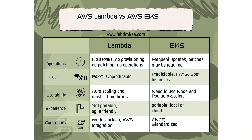The next thing to consider is scalability. AWS Lambda, like any other serverless service, can scale easily and seamlessly. But there is one catch — this scalability hits a wall when it reaches the AWS hard limit, and then you don't have any choice. In the case of EKS, you need to take care of scaling yourself. You can use a node autoscaler such as Cluster Autoscaler or Karpenter, and you also have to use pod autoscalers such as Horizontal and Vertical Pod Autoscalers.